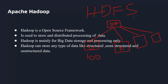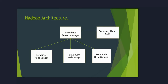In Hadoop, we can store three types of data: structured, semi-structured, and unstructured. Structured data includes tables and CSVs. Semi-structured data includes XML and JSON. Unstructured data includes notepad files, PDFs, videos, and audio. Hadoop can store all these types of data.